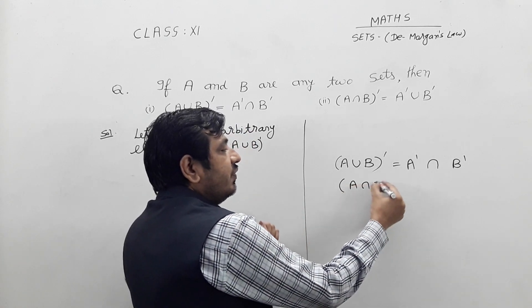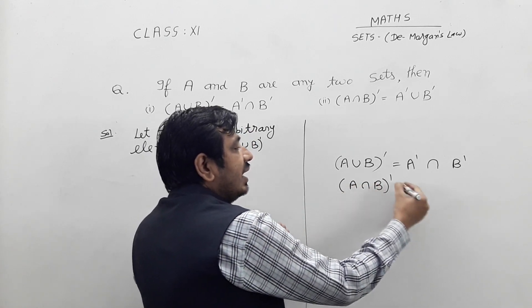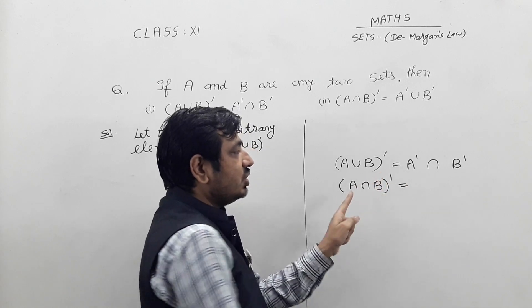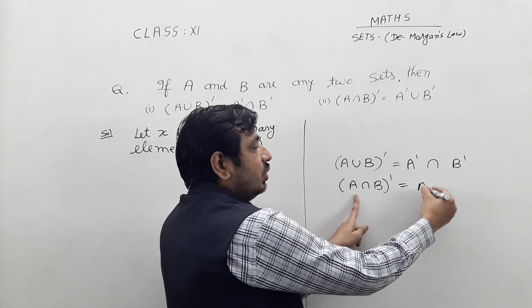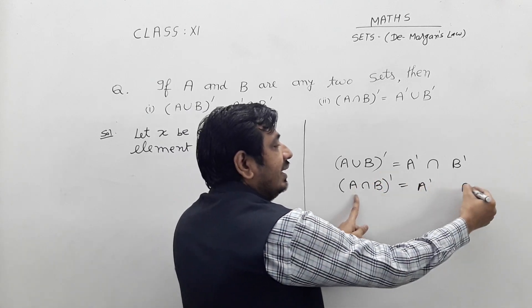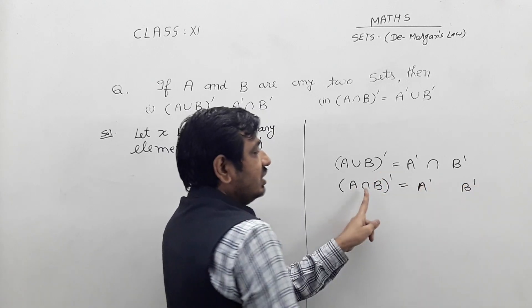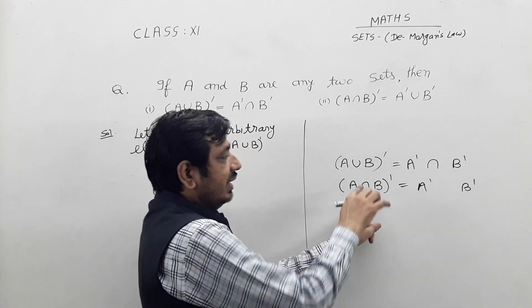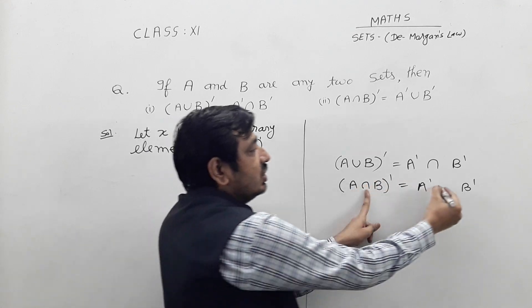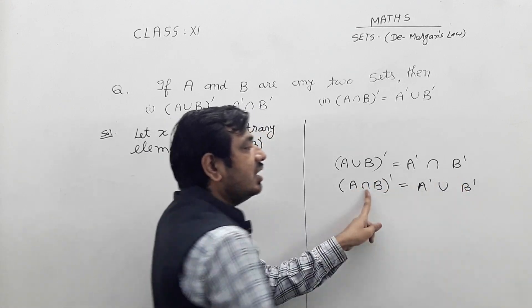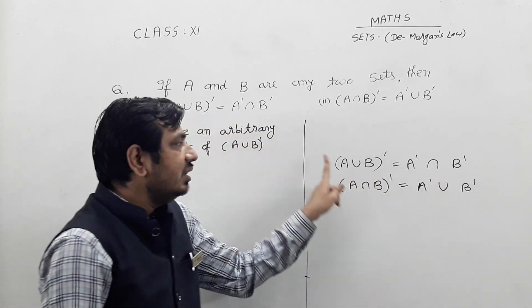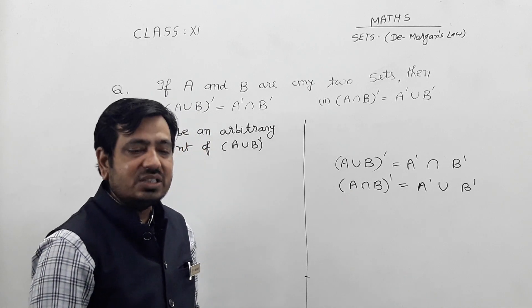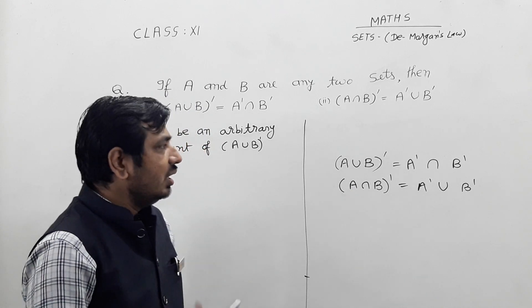The second De Morgan's law is: if you have A intersection B whole dash, and you want to separate it into A dash and B dash, this side becomes reverse — it is union. These both are called De Morgan's law.